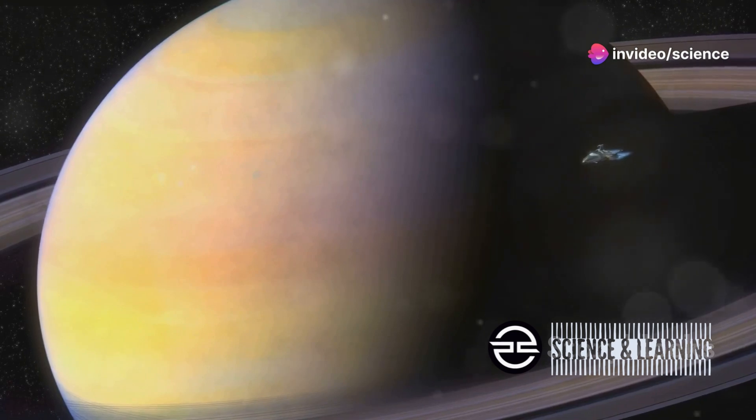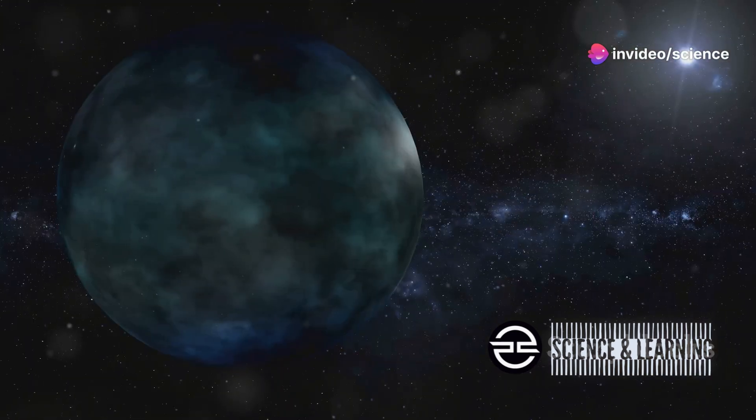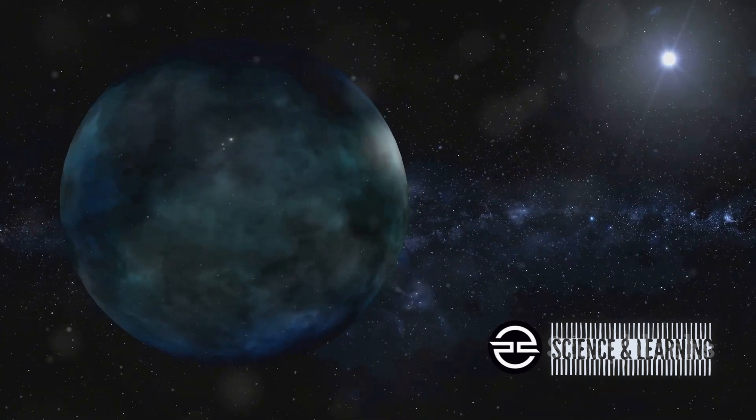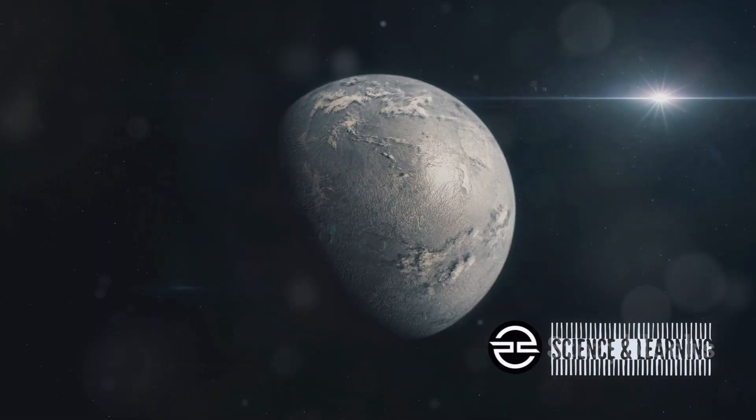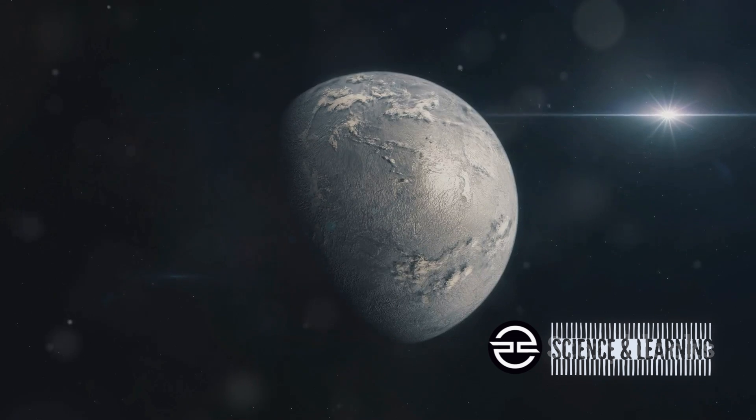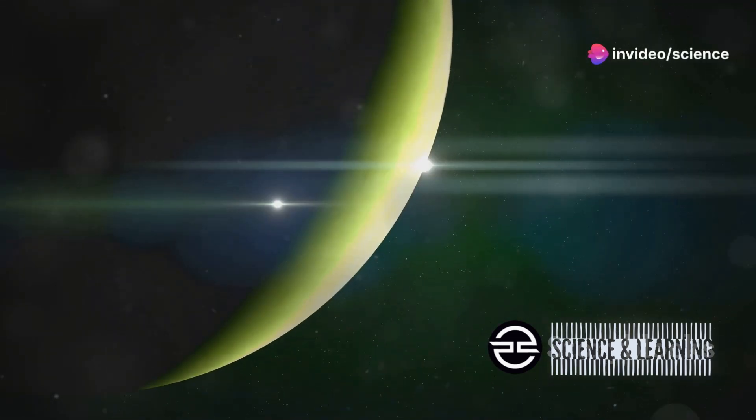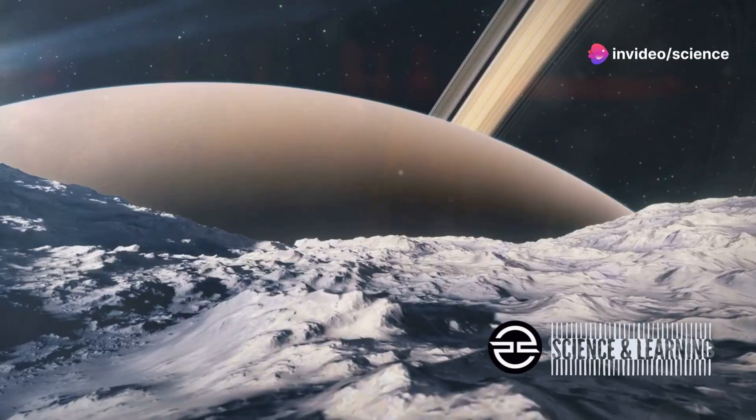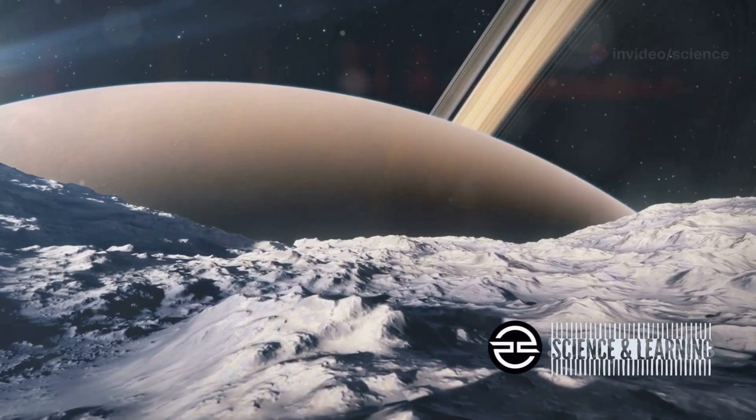Preliminary data suggests that this exoplanet has a similar density to Earth. This hints at a rocky composition, potentially with continents and oceans. But what kind of atmosphere might it have? Could it have a protective magnetic field like Earth's? These are just some of the questions that keep scientists up at night.